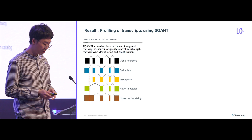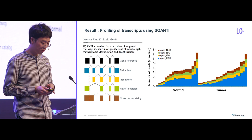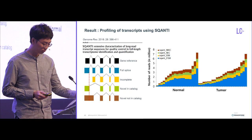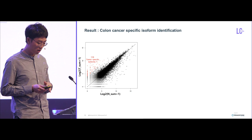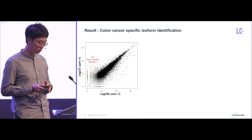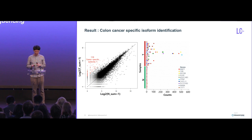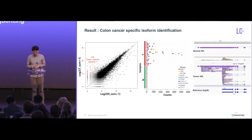We attempted to define some novel isoforms using Squanty, and profiled the reads for all samples into structural categories. For the isoform analysis, we specifically focused on reads annotated as novel in catalog and novel not in catalog. From these isoform-annotated reads, we were able to find some tumor-specific isoforms, mostly found in tumor samples. We listed the top 10 most abundant tumor-specific isoforms by gene annotation, and in one paired sample we could see a differentially expressed isoform specific to the tumor.